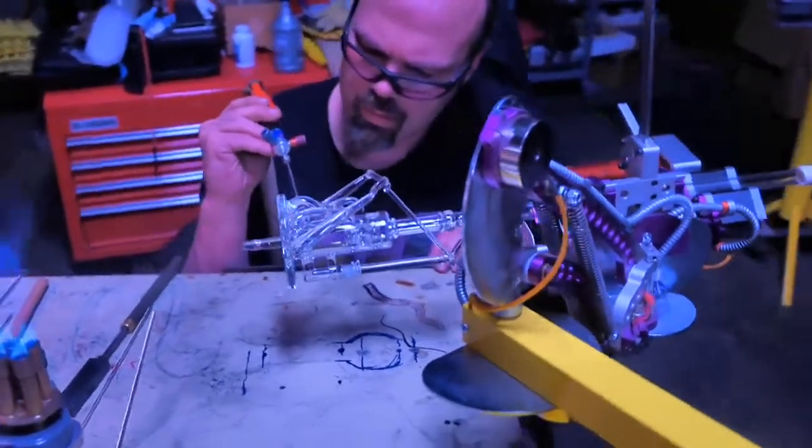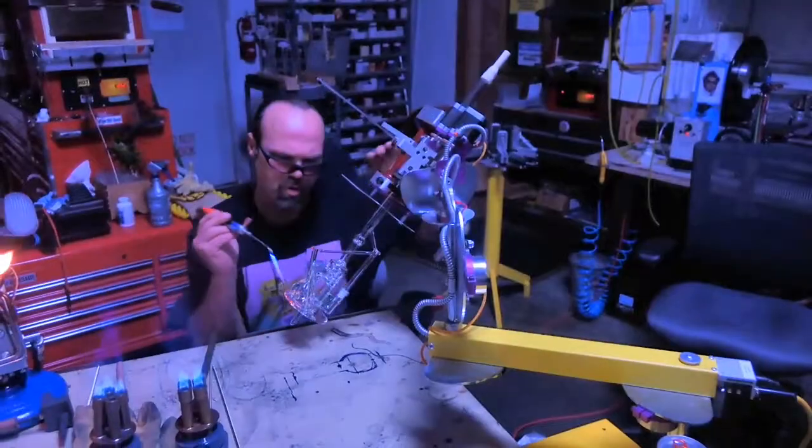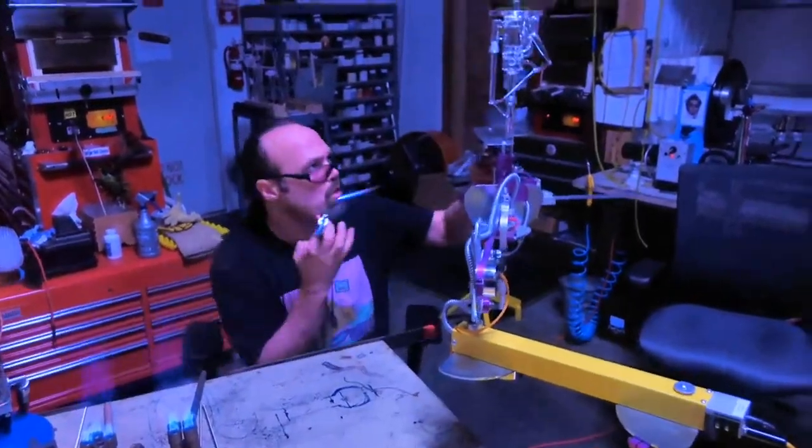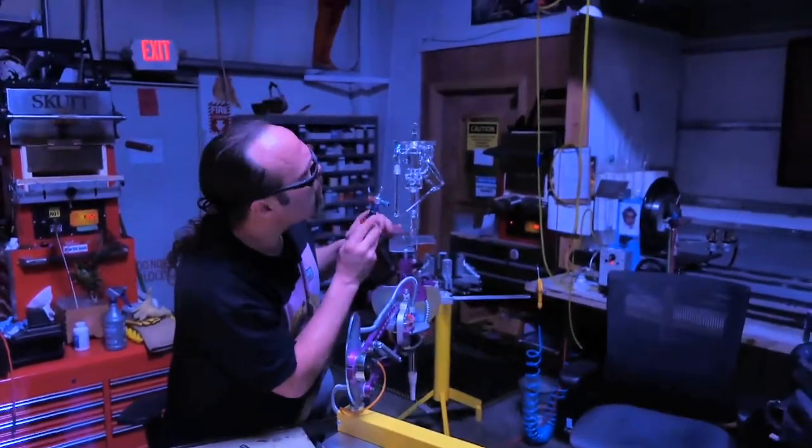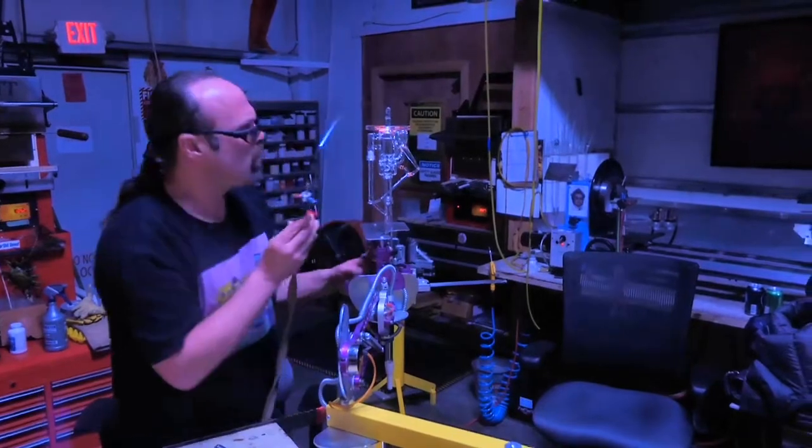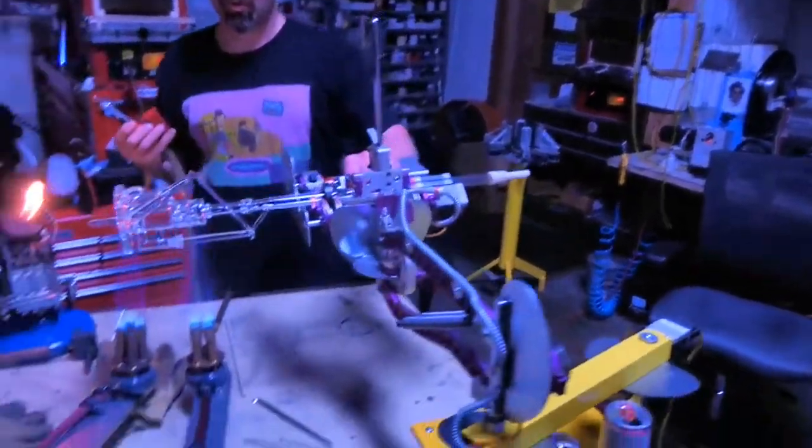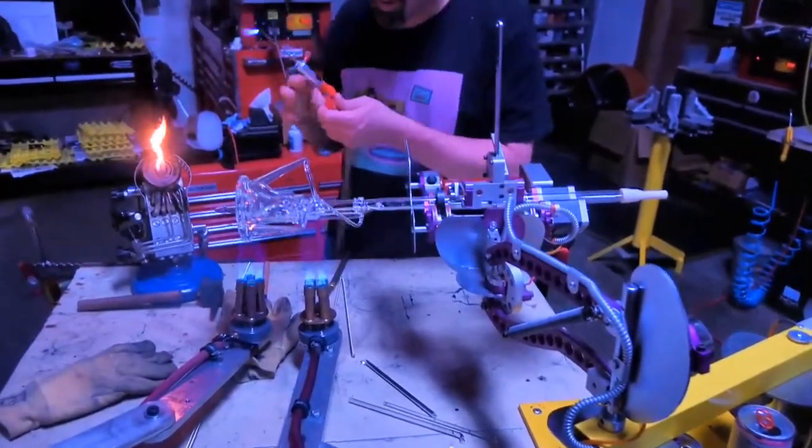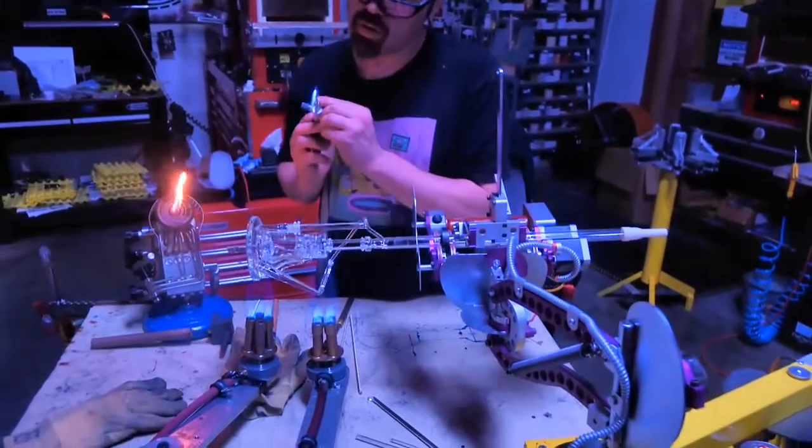He can brace his hand against the bench, brace his hand against the Inquala, and when he's done, return to the Bunsen to keep the piece hot.